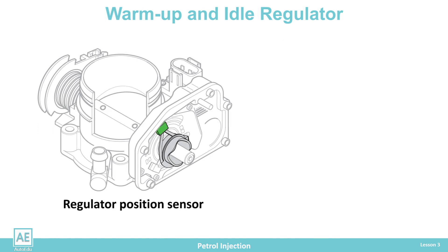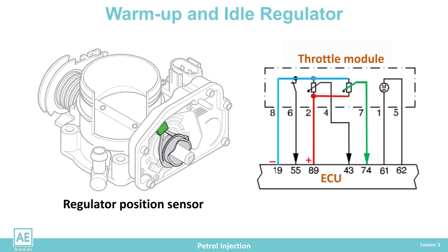The regulator position sensor is a potentiometer that monitors the current idle position of the regulator. When the signal from the sensor is lost, the regulation is interrupted and the spring mechanically sets the regulator in the failure position.